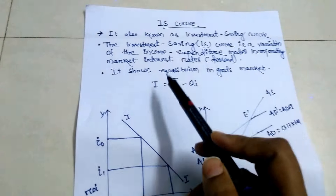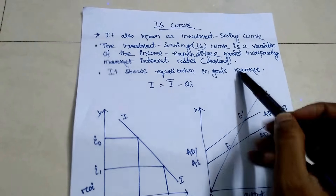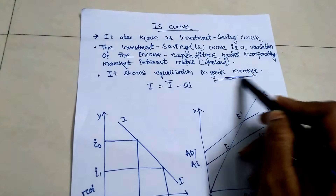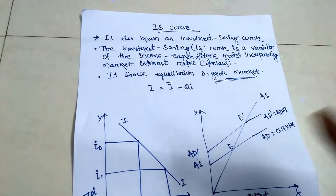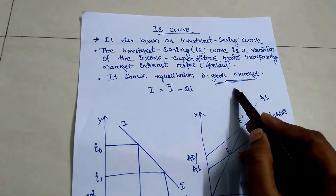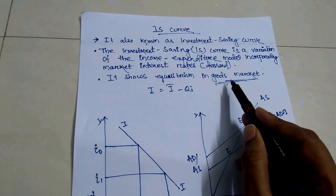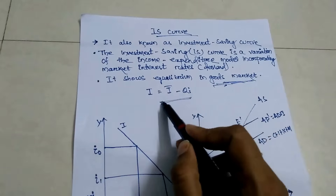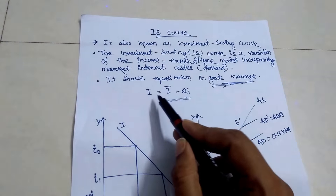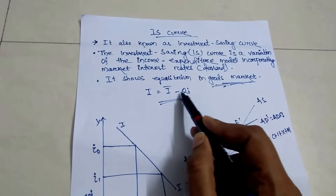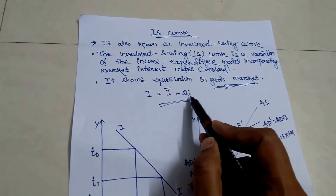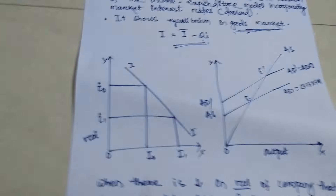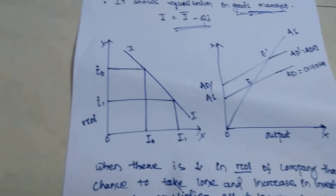The IS curve shows equilibrium in the goods market. You have to remember that in the LM curve it shows the capital market, and in the IS curve it shows the goods market. The formula of IS curve is: I equals autonomous investment minus Q into I, where I is the quantity of the rate of interest.